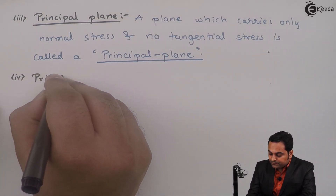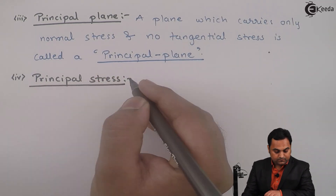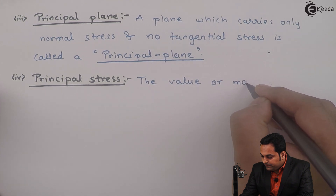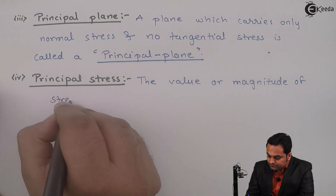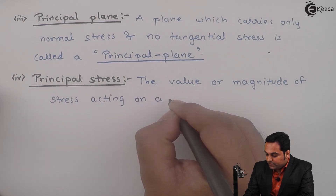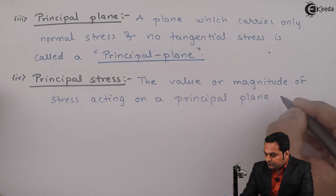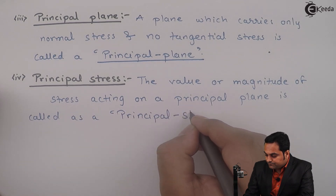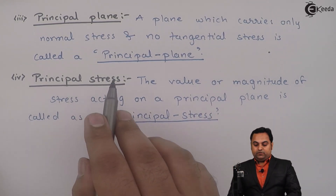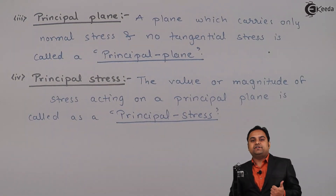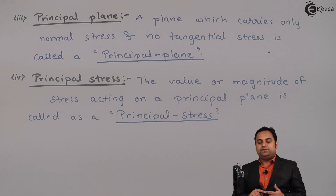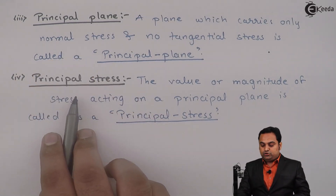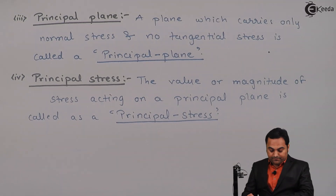Next, principal stress. The value or magnitude of stress acting on a principal plane is called principal stress. Specifically, the normal stress value present on the principal plane is called principal stress.